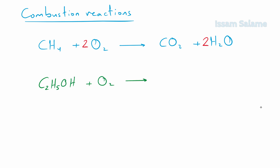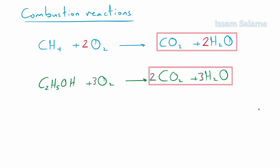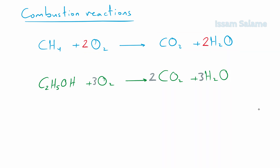Another example: combustion of ethanol with oxygen also produces carbon dioxide and water. We multiply carbon dioxide by two and oxygen molecules by three. As you can see from these two examples, one of the reactants is oxygen gas while the products are carbon dioxide and water — this will be the case for most combustion reactions involving carbon-based compounds. Note that these equations show complete combustion; in incomplete combustion, we may expect other products like carbon monoxide and carbon, which is called soot.